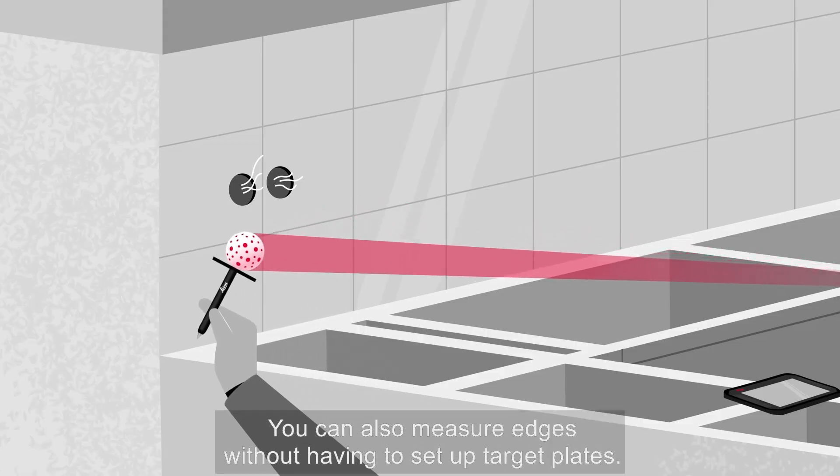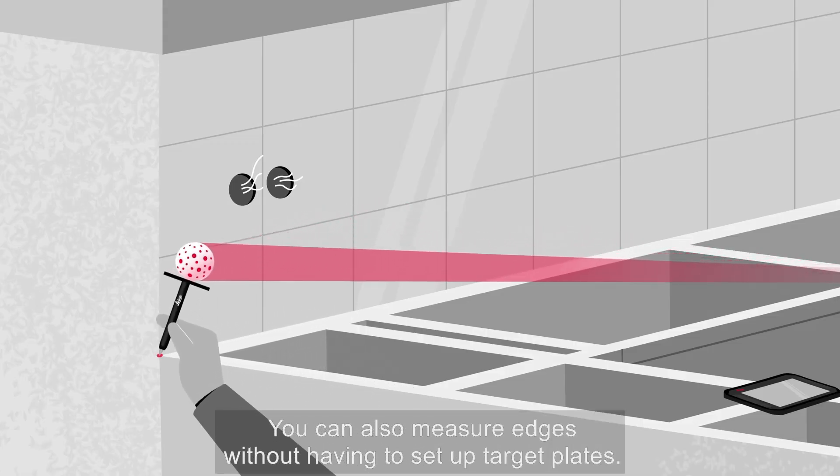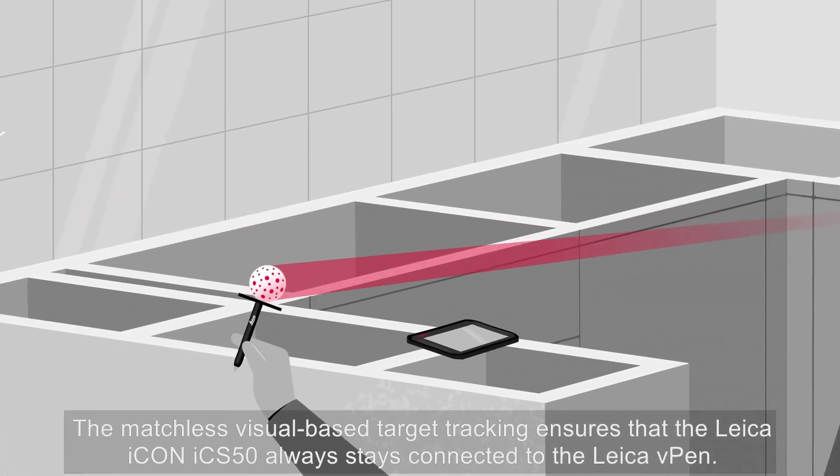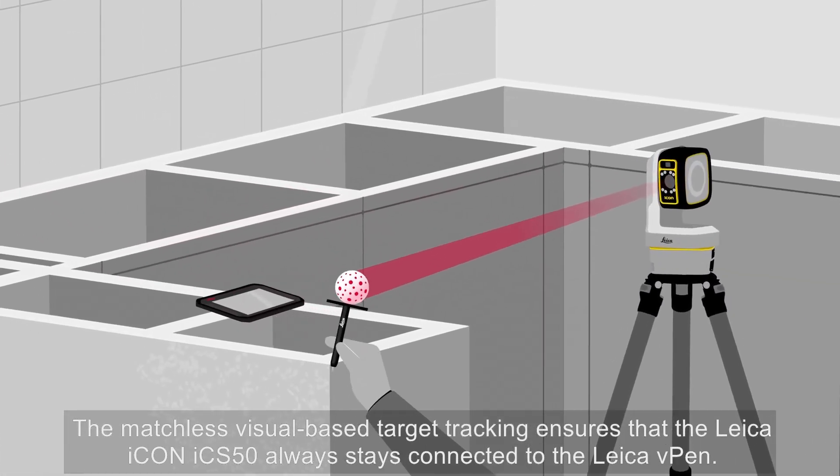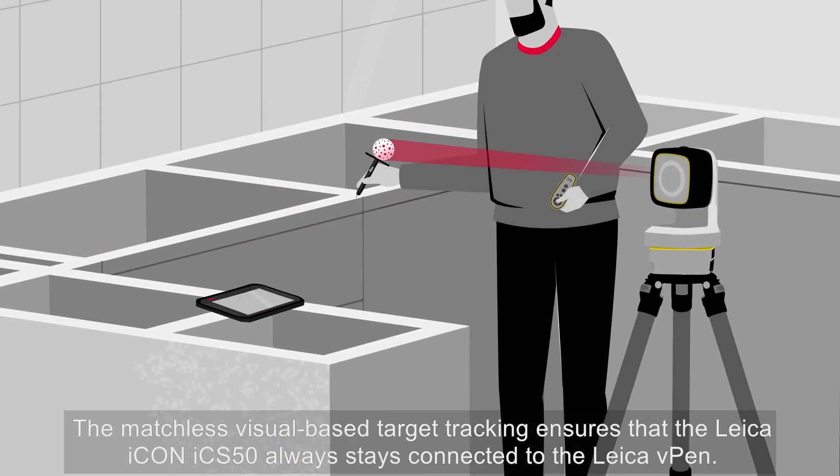You can also measure edges without having to set up target plates. The matchless visual-based target tracking ensures that the Leica Icon ICS50 always stays connected to the Leica v-pen.